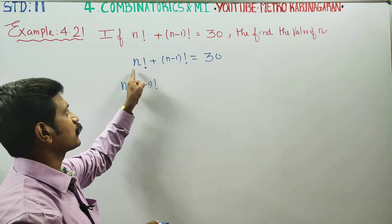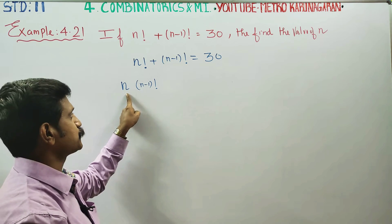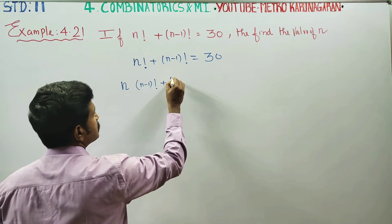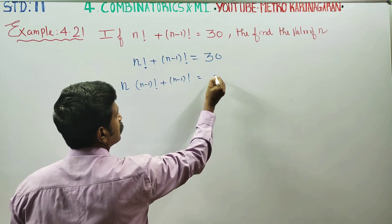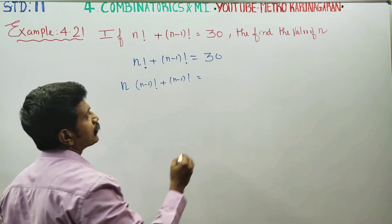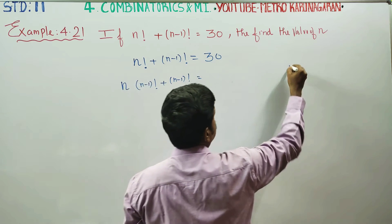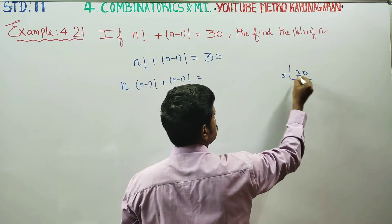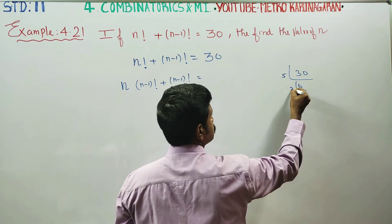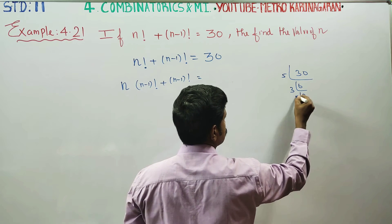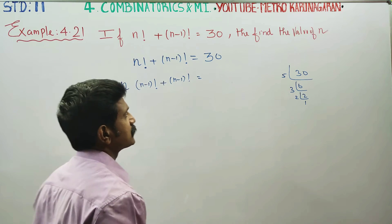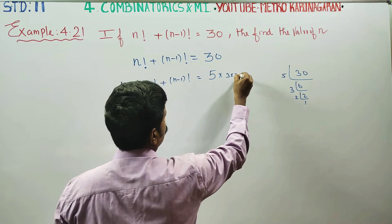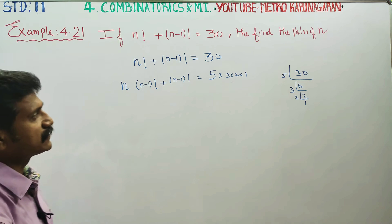We need to factor 30. Breaking it down: 5 times 6 gives 30, and further, 5 into 3 into 2 into 1 is equal to 30.